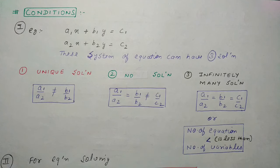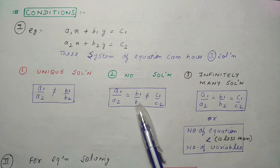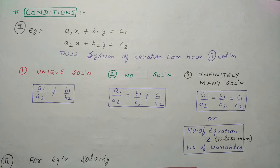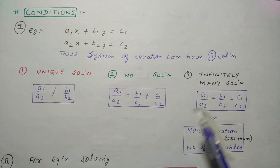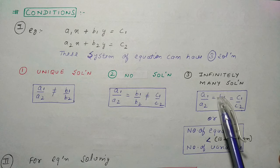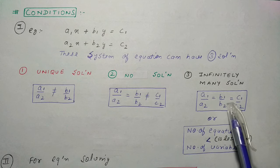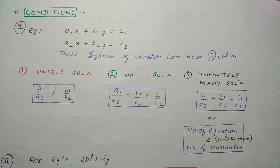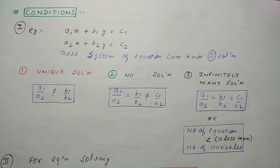No solution तब आएगा जब a₁/a₂ = b₁/b₂ ≠ c₁/c₂ condition occupy होगी। Infinitely many solution तब आएगा जब a₁/a₂ = b₁/b₂ = c₁/c₂ condition occupy हो जाएगी।